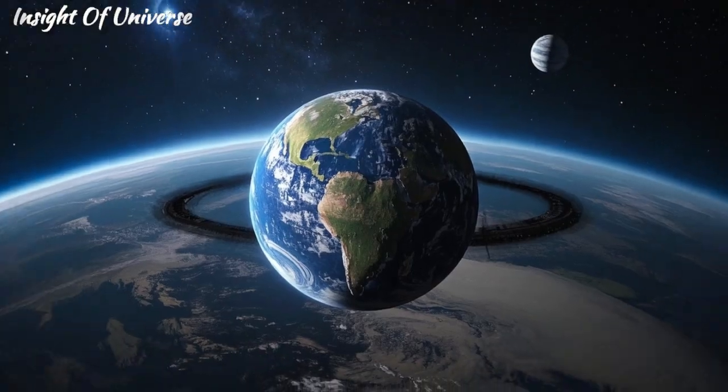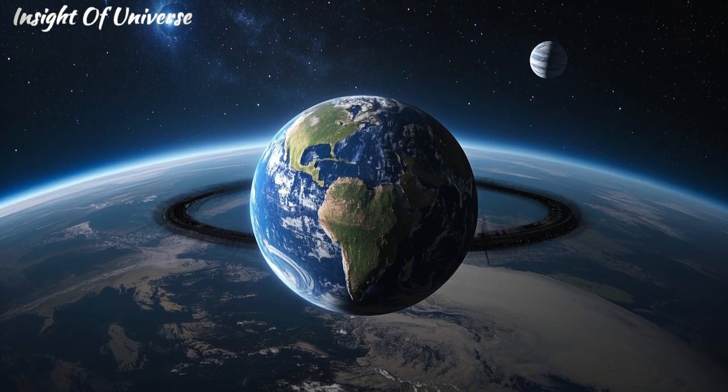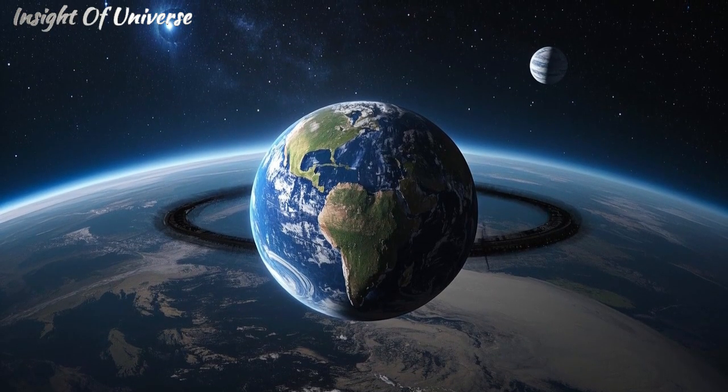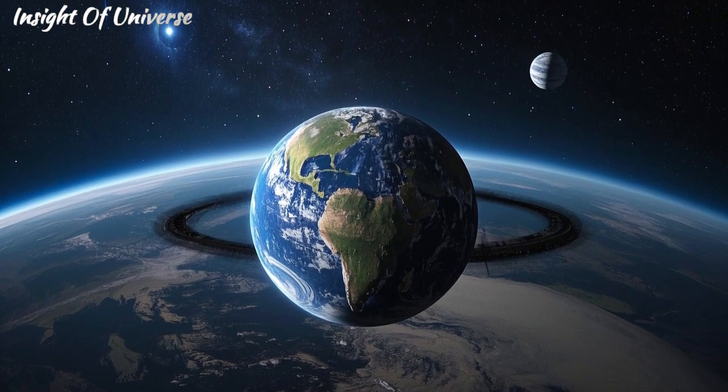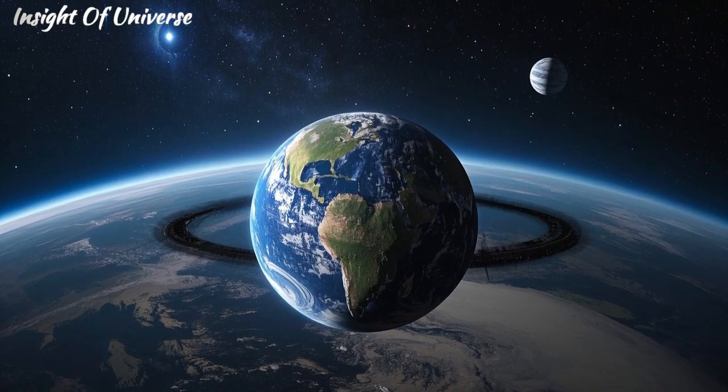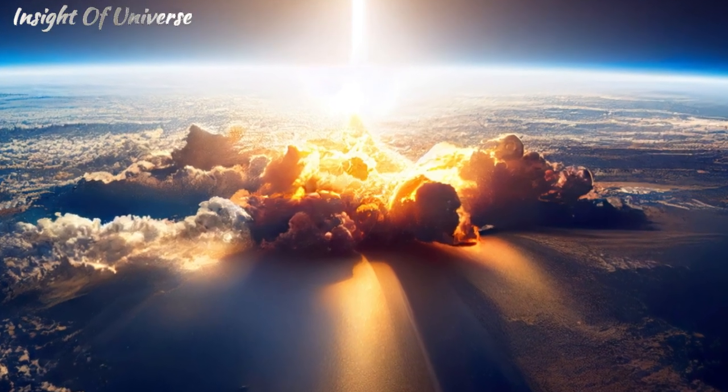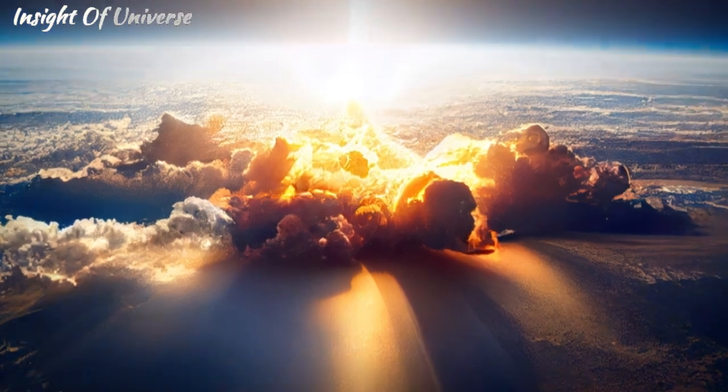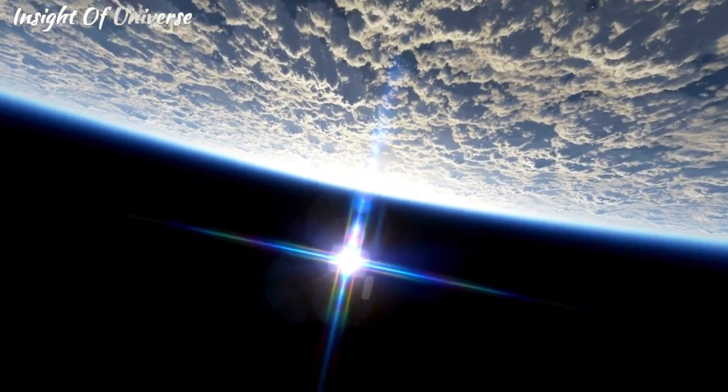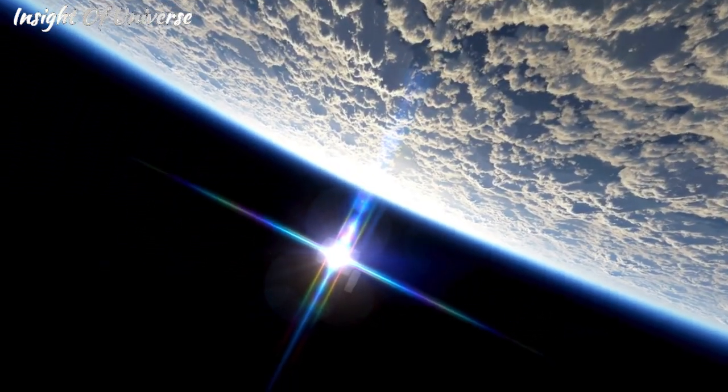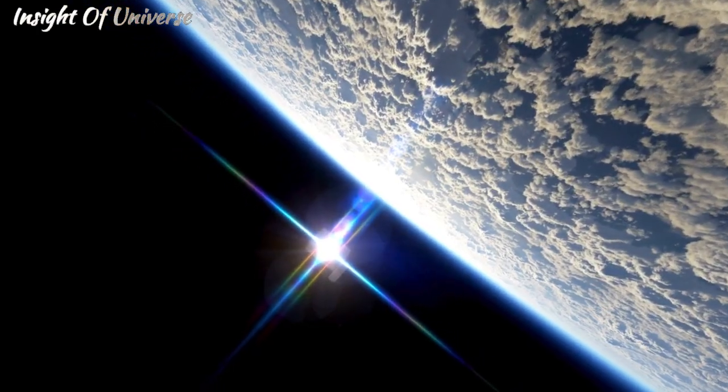If a magnetar were ten light-years from Earth, a single burst could fry our atmosphere, destroying the ozone layer and exposing the planet to lethal radiation. Fortunately, the nearest magnetar, SGR-1806-20, is 50,000 light-years away, so we're safe. For now.